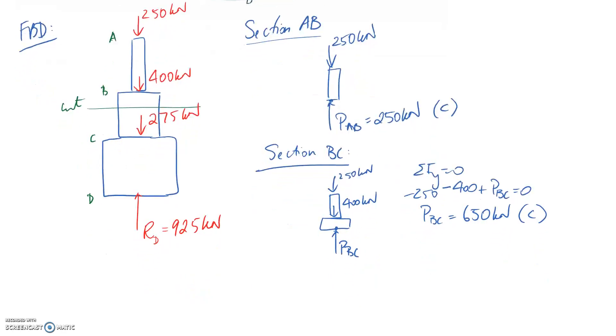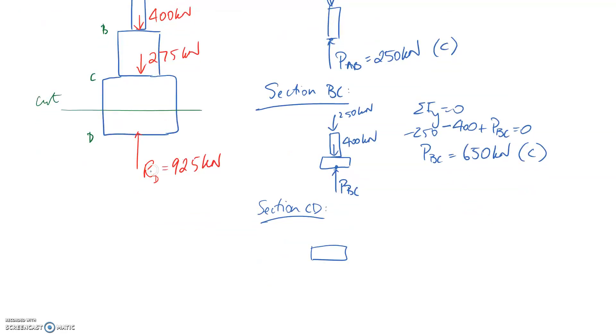We've got one left for section CD. Again remember we can only take one cut at a time, so this time we're cutting through here. We're going to take the bottom side, so all that we've got is this 925 here. At the cut point we need to replace it with the internal load PCD. It's going to have to go downwards to counteract. When we sum forces this is going to have to be 925.